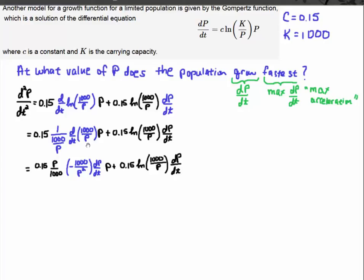If I take the derivative of 1,000 over p, that's like p to the minus 1, bring the minus 1 down, and you get p to the minus 2, so that's 1,000 over p squared. However, this is easy to forget. You have to take the derivative of the p again. So this is the chain rule. So p is a function of t, so I have to multiply this by dp dt.